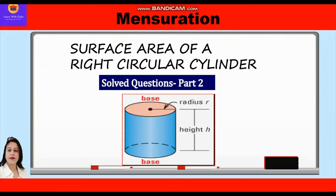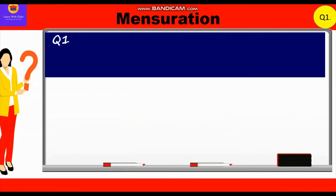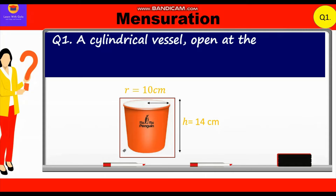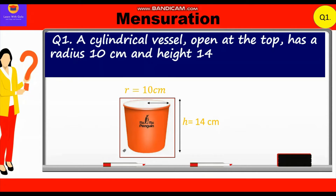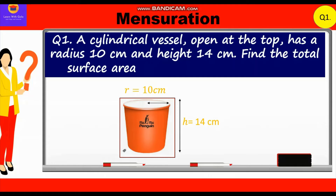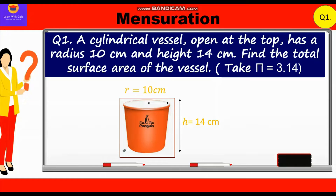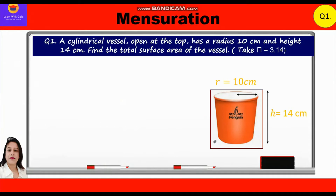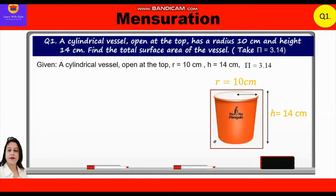Question 1. A cylindrical vessel open at the top has a radius of 10 cm and height 14 cm. Find the total surface area of the vessel. We have to take the value of pi as 3.14. Given: radius = 10 cm, height = 14 cm, pi = 3.14.